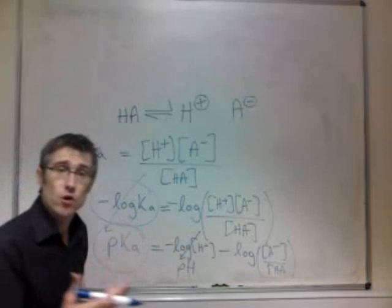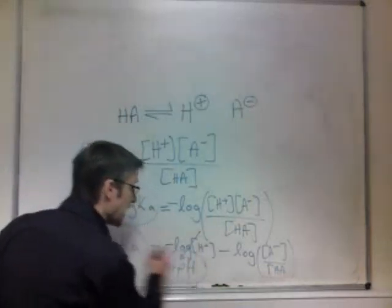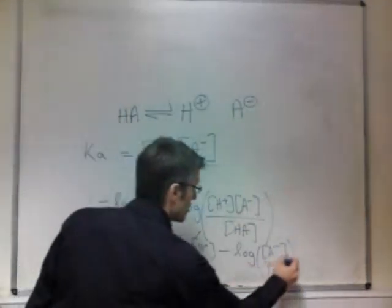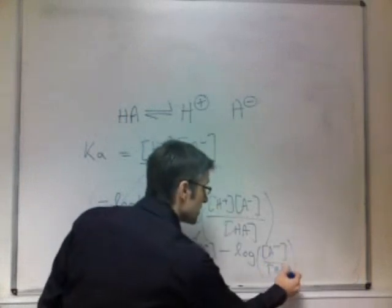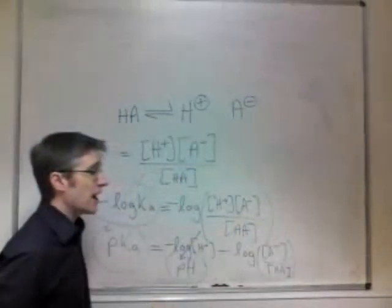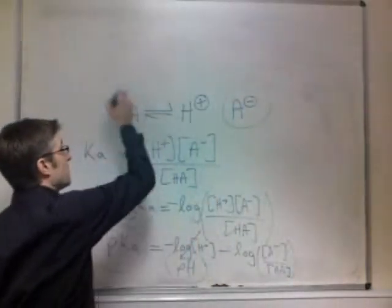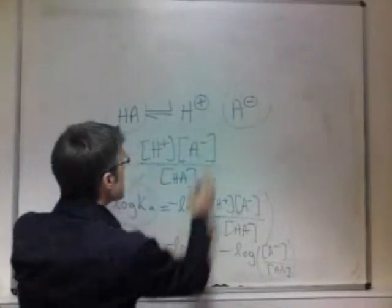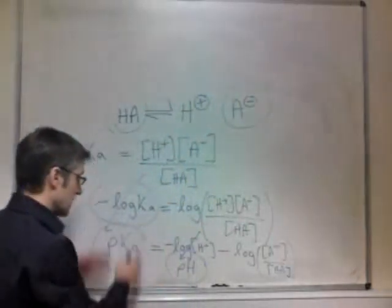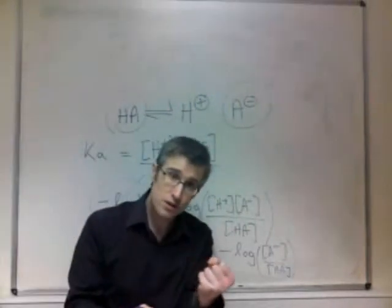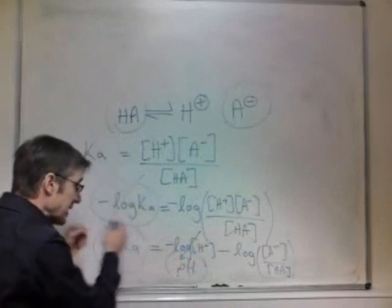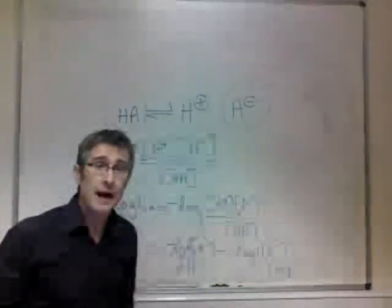The negative log of H+ is simply pH, so the pKa of an organic compound will be the same as the pH when A- is equal to HA. If we have as much of this in the equilibrium as we have this, in other words if the equilibrium is perfectly balanced, the pH of that solution will be the same as the pKa of the organic compound.